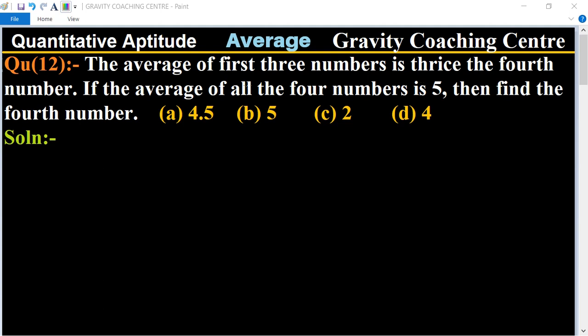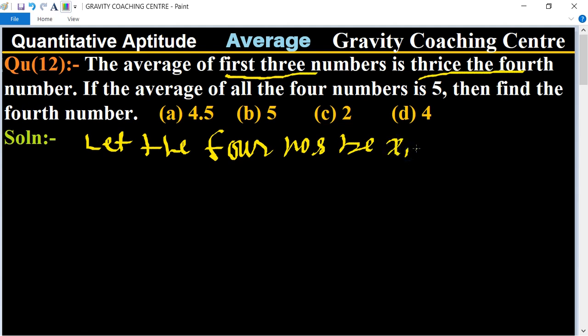In this question, the average of first three numbers is thrice the fourth number. First of all, let the four numbers be x1, x2, x3, and x4.